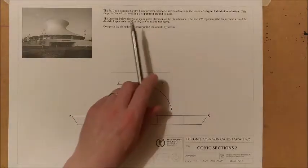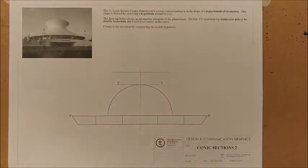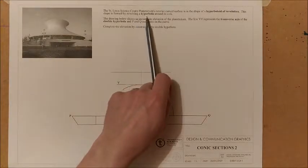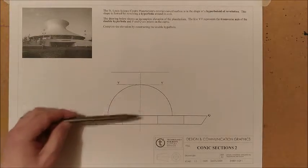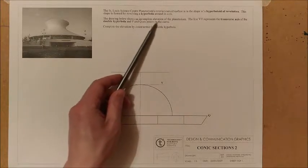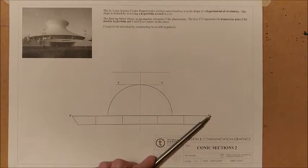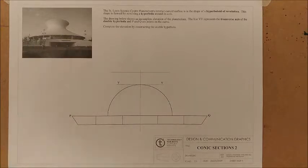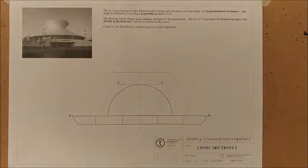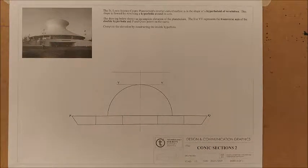Looking at the question first of all, the St. Louis Science Center Planetarium's exterior curved surface is in the shape of a hyperbola of revolution. This shape is formed by revolving a hyperbola around its axis. The drawing below shows an incomplete elevation of the planetarium. You see the base with the line consisting of points P and Q. The line VV represents the transverse axis of the double hyperbola, and P and Q are points on the curve.